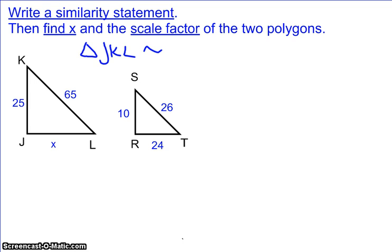The one squiggly mark means similar. And now when I name my second triangle, I have to make sure that the letters match up correctly. So for example, the J is in the lower left-hand corner. It looks like it's representing an angle that might be 90 degrees.